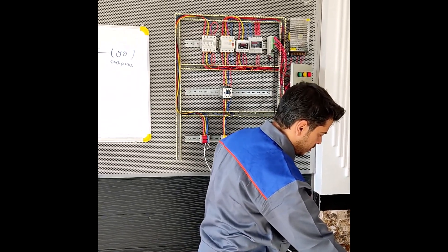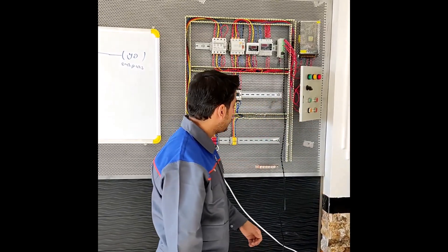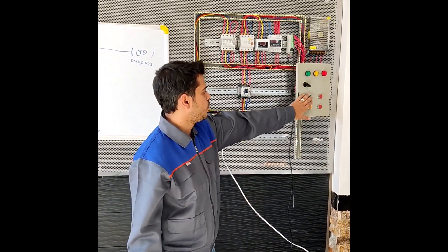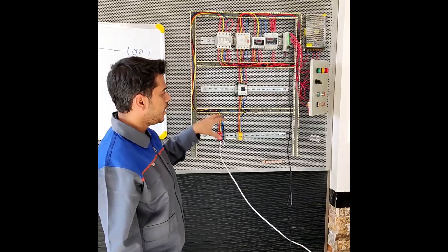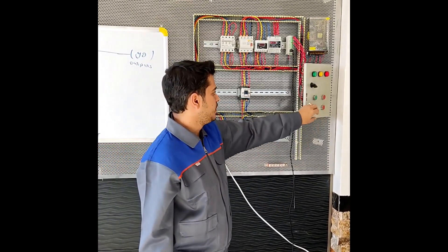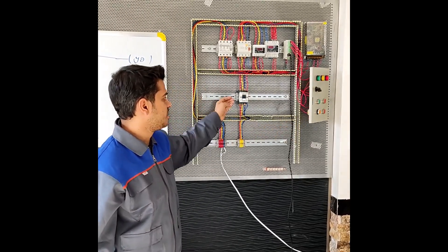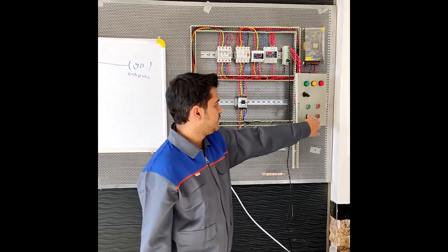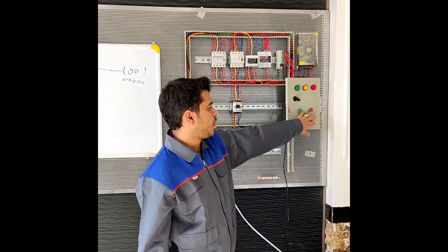Now the motor is working continuously and we didn't make any changes to the wiring, just changed the program. When we click the start input, the motor will be activated permanently and it will be deactivated with the stop input.